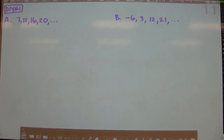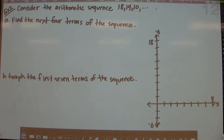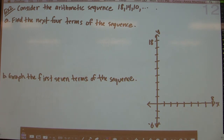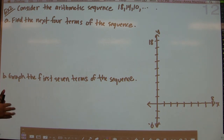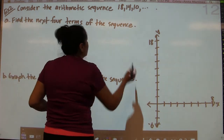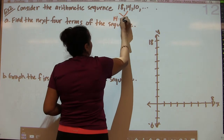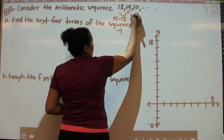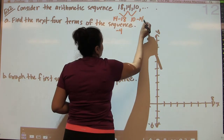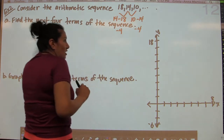In example 2, consider the arithmetic sequence 18, 14, 10 — going on and on. This is an infinite sequence because it's going to go on forever, and it's arithmetic so there must be a common difference. The first thing to do in part A is find the next four terms. We compute 14 minus 18, which gives negative 4, and 10 minus 14, which also gives negative 4. So the common difference is negative 4.